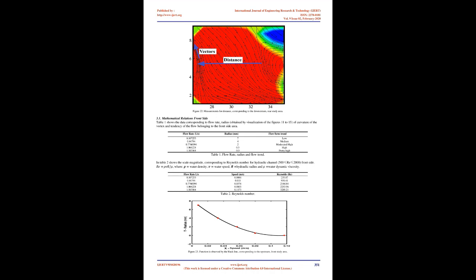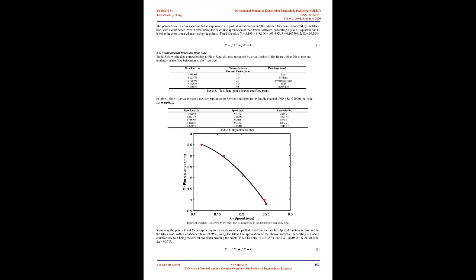Mathematical Relations — Rear Side: Table 3 shows data corresponding to flow rate and distance from pier obtained by visualization of Figures 16 to 20, covering the tendency of flow on the rear side. Table 4 shows the scale magnitude corresponding to Reynolds number for the hydraulic channel (500 ≤ Re ≤ 2000). Similarly, the experimental points are plotted as red circles and the adjusted function as a black line with 95% confidence level using Octave software, generating a grade-2 equation: y = 3.357 + 11.47x − 86.06x², with S = 0.0867 and R² = 99.7%.